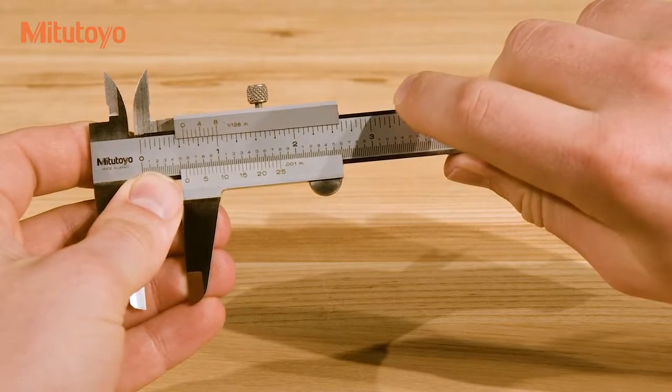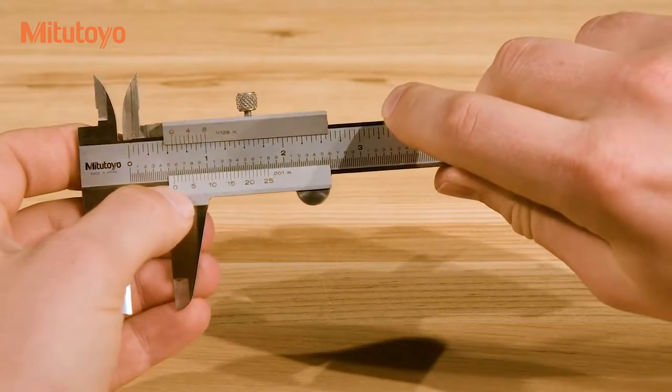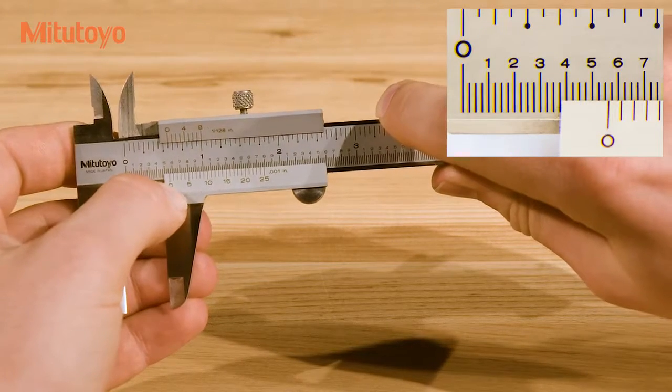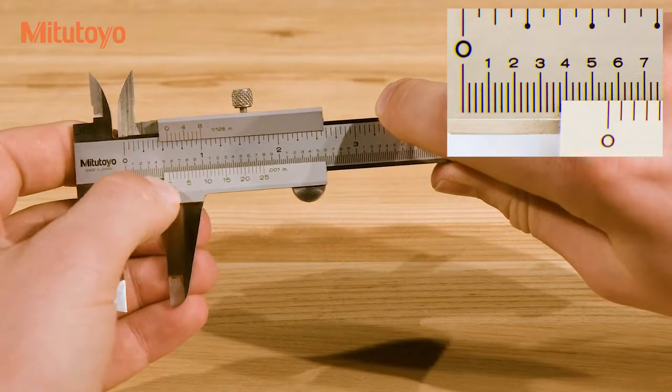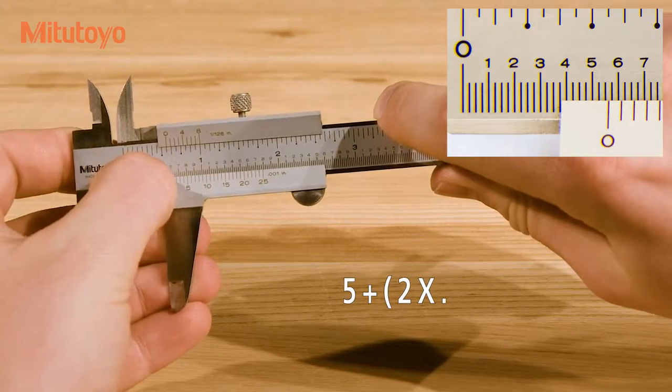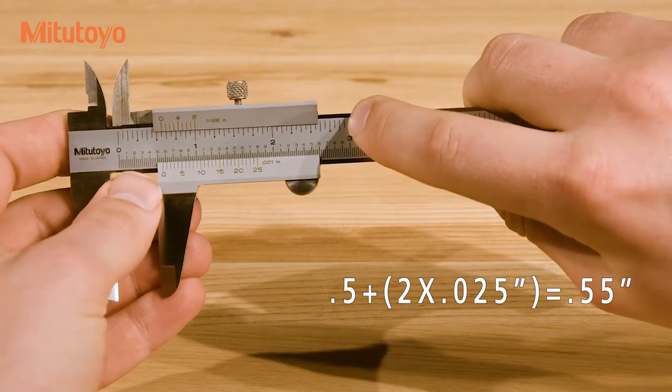Reading the caliper is a two-step process. First, look at the zero mark on the sliding scale and find the graduation that it last passed. In this case, it passed the five and then two more hash marks, so that's .55 inches.